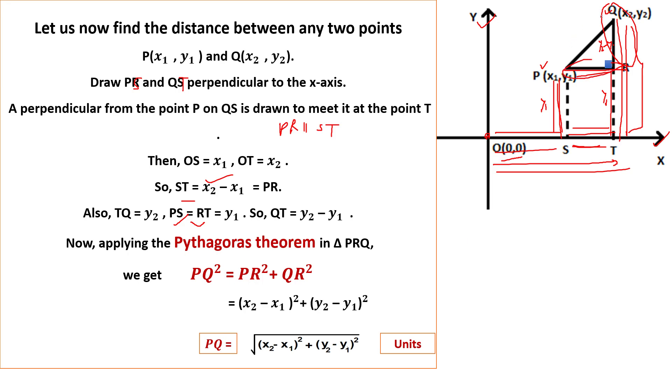So we will find the distance between P and Q. Apply the Pythagoras theorem. When you apply the Pythagoras theorem in triangle PRQ, it will be PQ square equals PR square plus QR square, and PR length is (x2 minus x1) whole square.